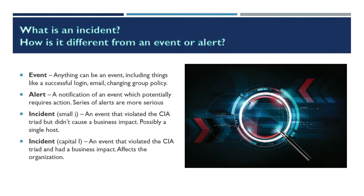There are two types of incidents we're going to be talking about. There's an incident that's sometimes distinguished with a small i, meaning it's something that violated something in the CIA triad — which means something related to confidentiality, integrity, or availability — but the incident didn't have a business impact. An example would be an employee who downloaded a PDF from a phishing file, but the malicious payload was stopped by the intrusion protection system. It occurred on a single host, and there wasn't any damage to the organization.